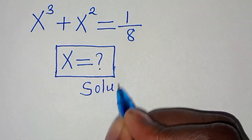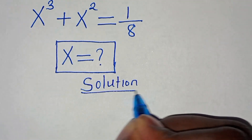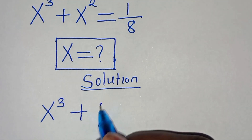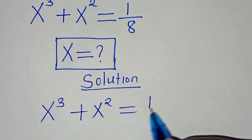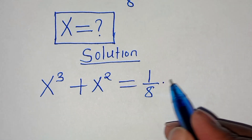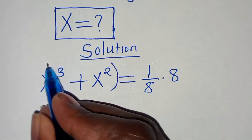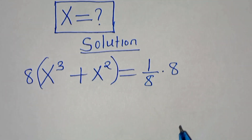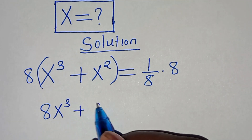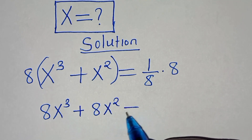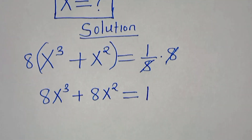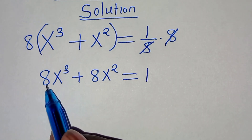Now let's provide a solution. We have x to the power of 3 plus x to the power of 2, which is equal to 1 over 8. The first step is to multiply both sides by 8, so that we have 8x to the power of 3 plus 8x to the power of 2, and 8 over 8 simplifies to give us 1 on the right.